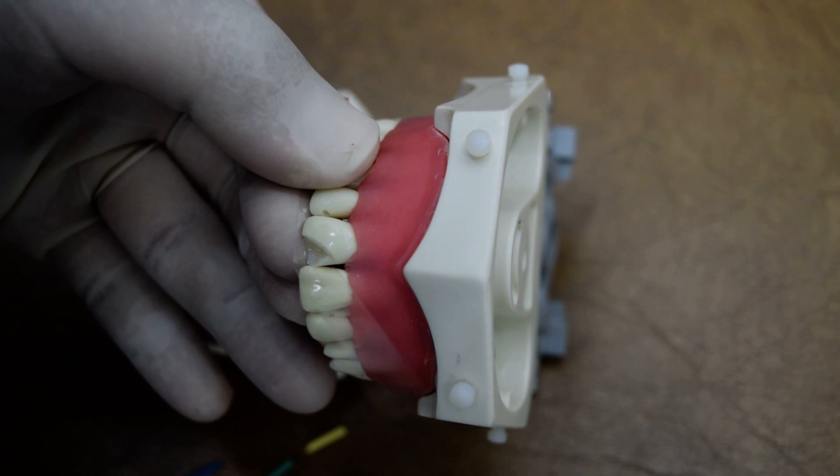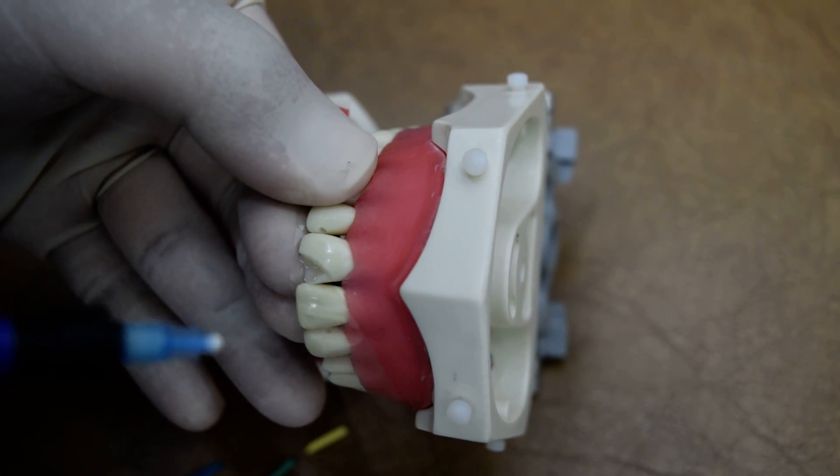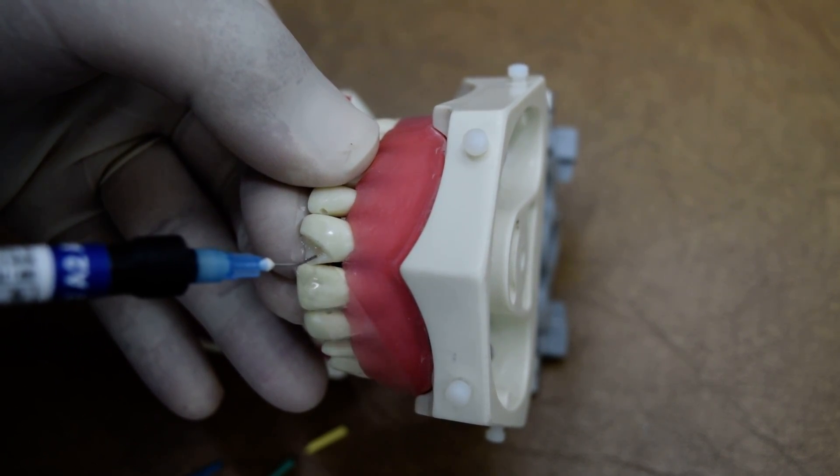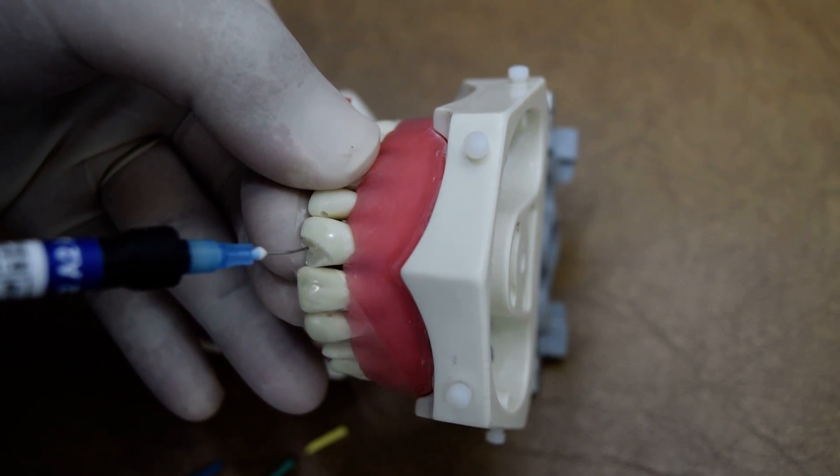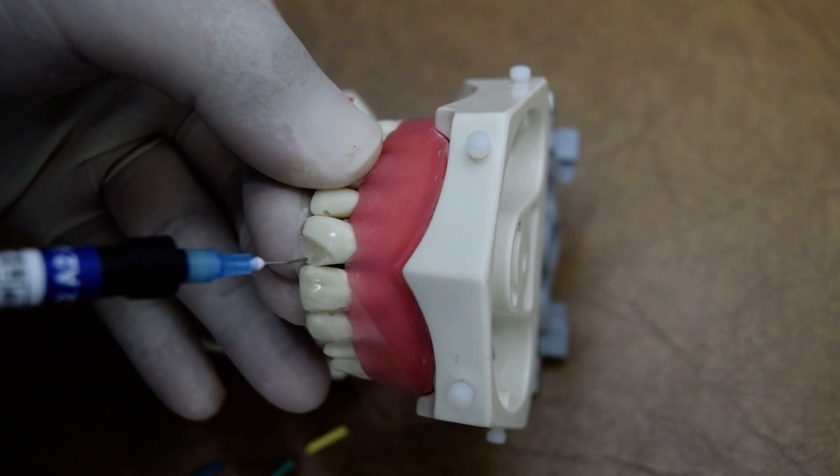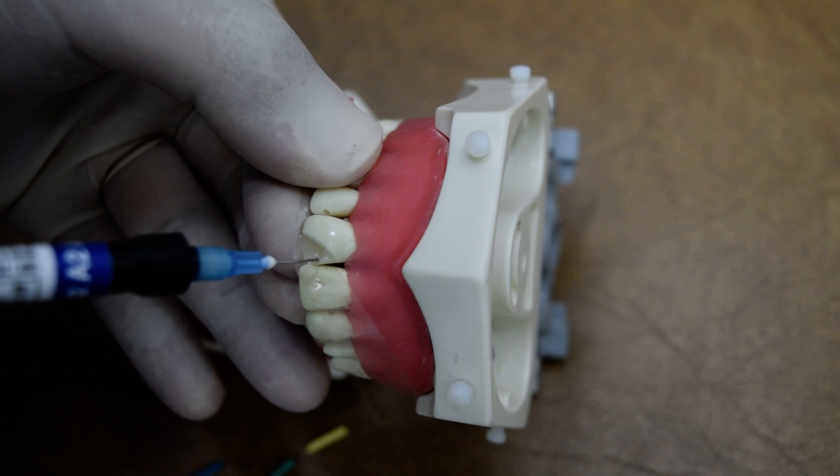As we are going to use flowable, we cannot close the strip over the tooth because it will lead to uncontrollable excess. So it's better to leave it open.